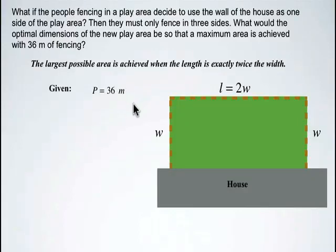We're given that the total perimeter of fencing on three sides is 36 meters. We're required to figure out both the width and the length in order to maximize the area of this play area.